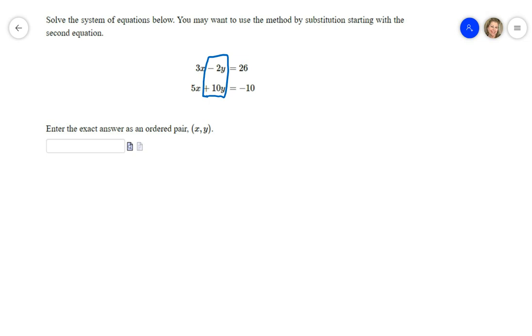So I'm gonna get rid of my y's. I'm gonna multiply this by 5. Remember, every term gets multiplied by 5. So that's gonna be 15x minus 10y equals 130.